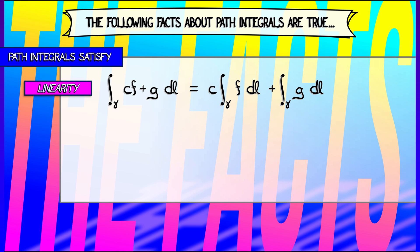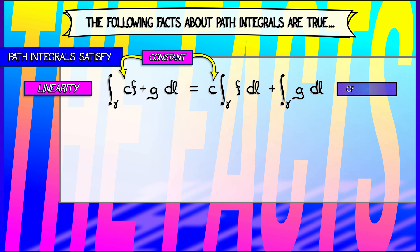For example, linearity. Given two functions f and g, and a scalar c, take the linear combination cf plus g. The path integral of that over gamma is simply the integral of f over gamma and the integral of g over gamma in a linear combination — rescale the one, add them together. That's the way it works.